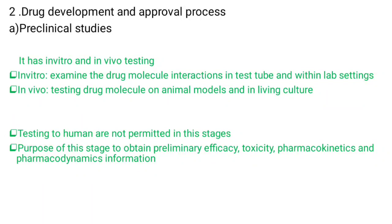The next method is the drug development and approval process. The first step is the preclinical study, which has in vitro and in vivo testing. In vitro examines the drug molecule interaction in test tubes and lab settings. In vivo involves testing the drug molecule on animal models and living cultures. Testing on humans is not permitted at this stage because the purpose is to obtain preliminary efficacy, toxicity, pharmacokinetics, and pharmacodynamics information.